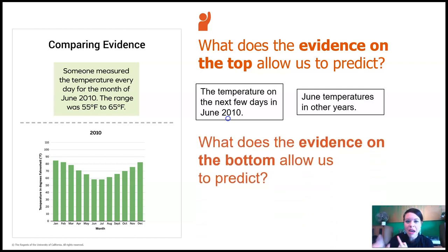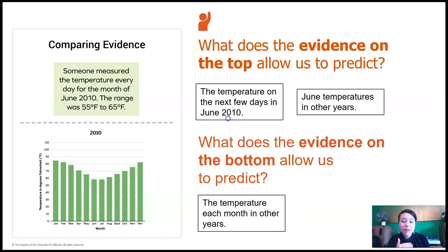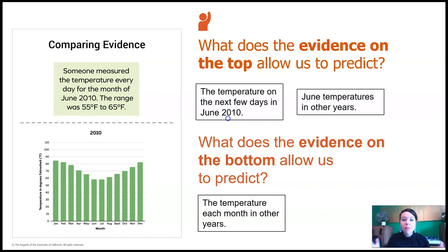What does the bottom piece of evidence allow us to predict? We could predict the temperature in every other month in any other year. On the top we could only use it for June, but on the bottom we could use it for the entire year — I could predict the expected temperature for any year in the future and any month of the year.